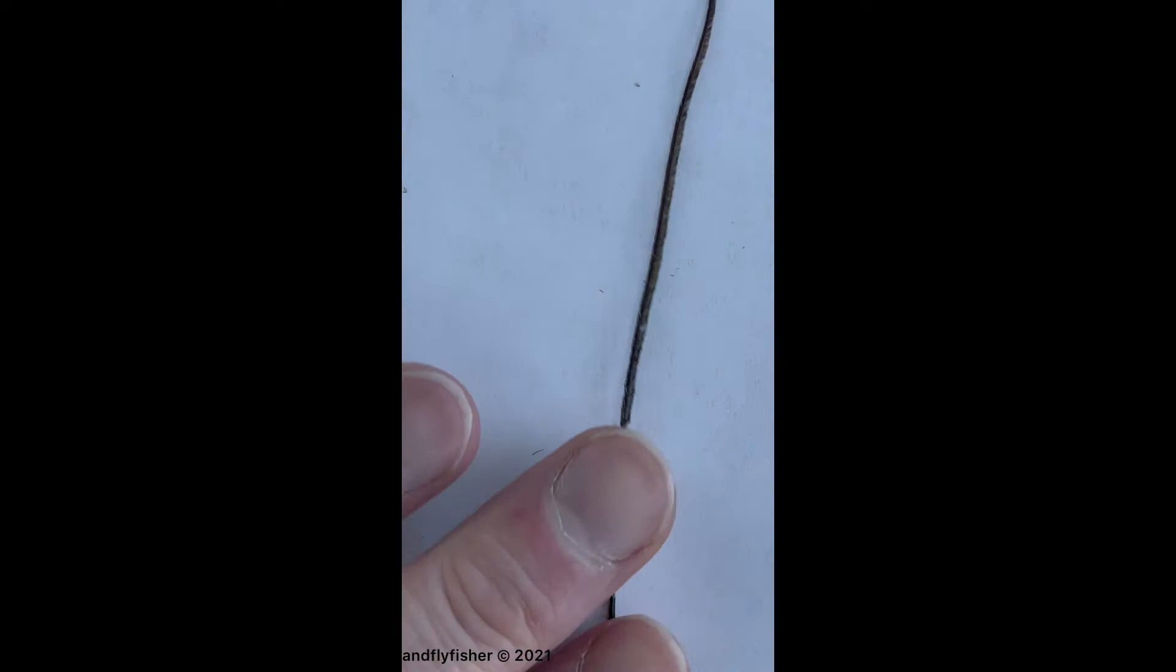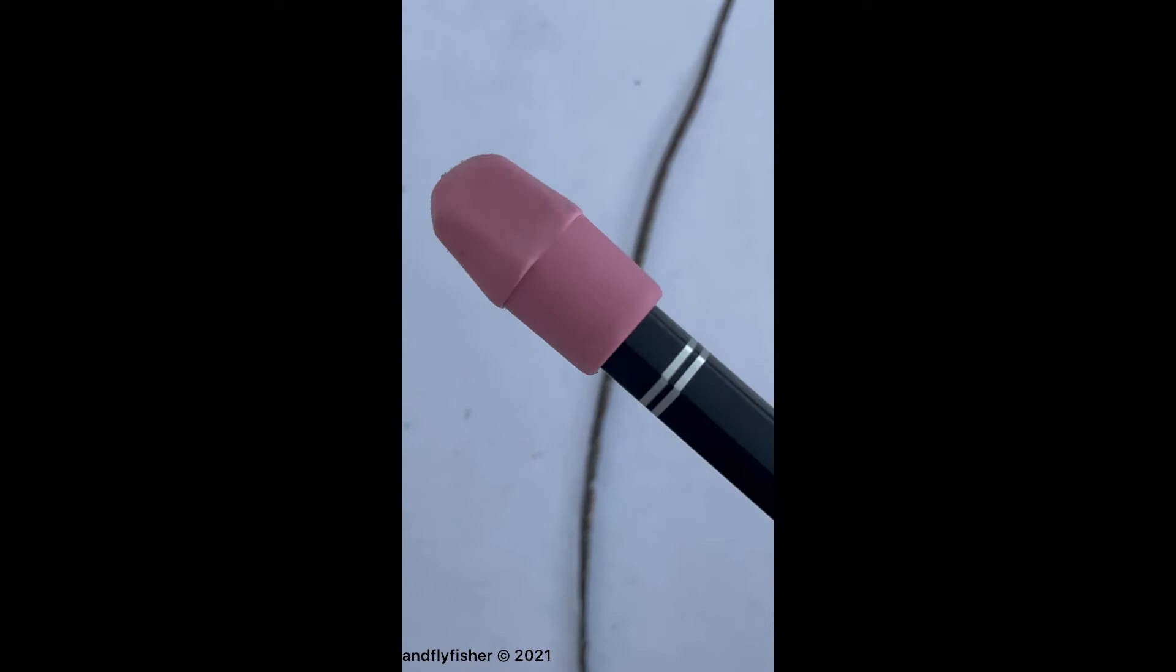First you're going to need a piece of peacock curl. And then you're going to need a pencil eraser. You can just use the regular eraser that's on the end of a pencil. This one doesn't have an eraser so I had to add one to it.